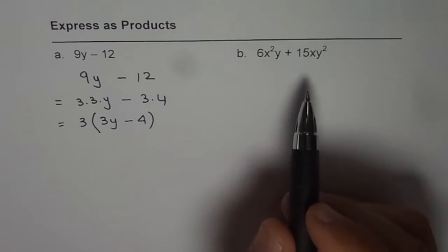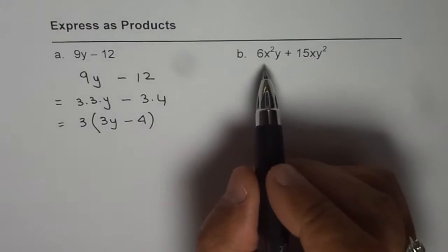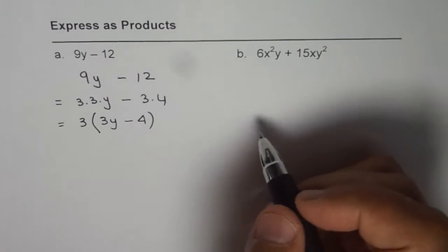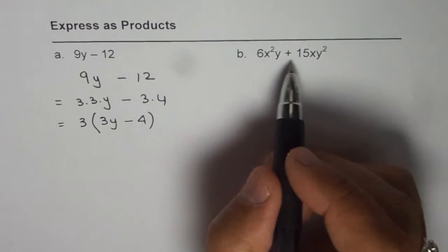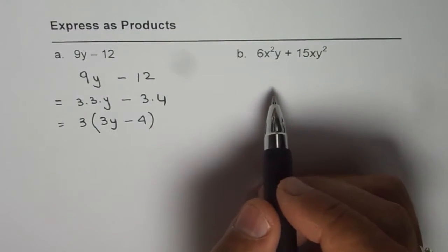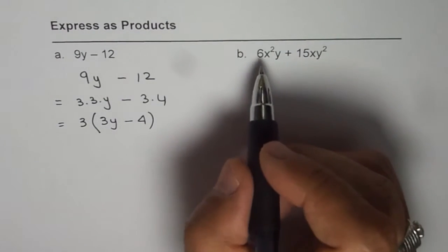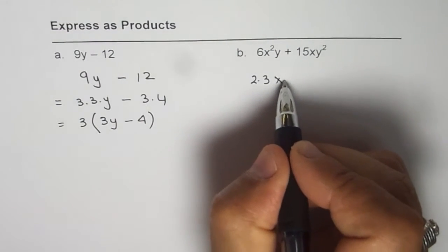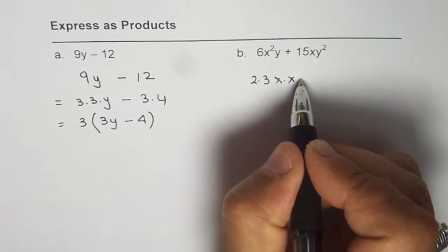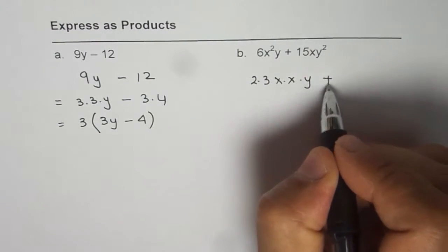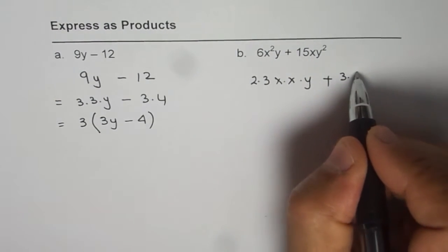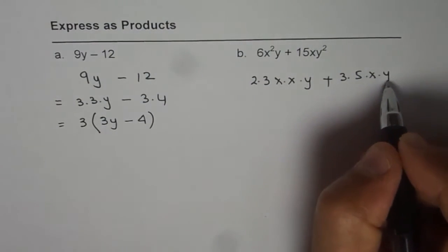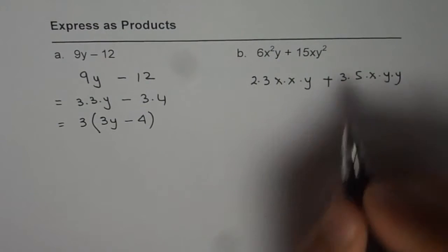Let's repeat the process for part B. We have 6x²y plus 15xy². The idea is to write prime factors and then find the common factors. 6 is 2 times 3, so we write 2 times 3 times x times x times y. Plus, 15 is 3 times 5, then x times y times y.